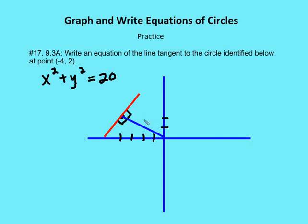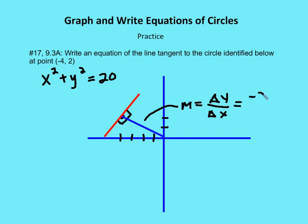So the first thing I want to do is find the slope of the radius at this point. The slope is just the change in y over the change in x. Since I'm going from the origin (0, 0) to the point (-4, 2), I'm going down 2 and over to the right 4, so the slope is negative 2 over 4, or negative one-half. The slope of the perpendicular tangent line will be the opposite reciprocal, which is just 2.